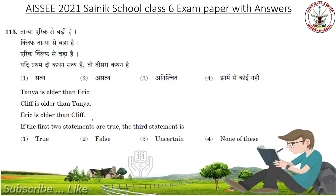Tanya is older than Eric, Cliff is older than Tanya, Eric is older than Cliff. The first two statements are true. The third statement is? Answer: False.